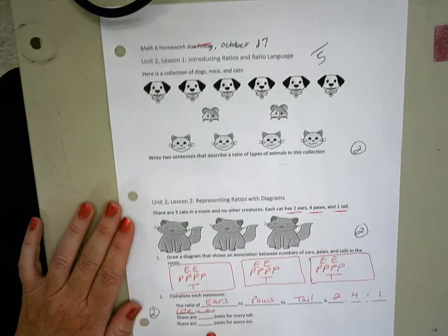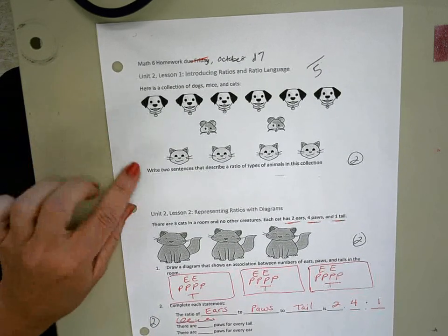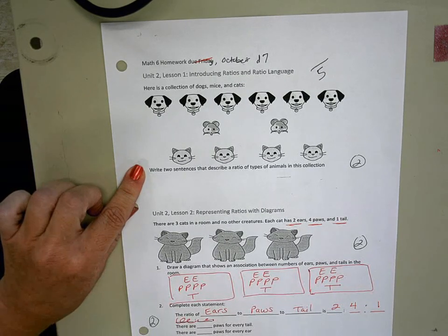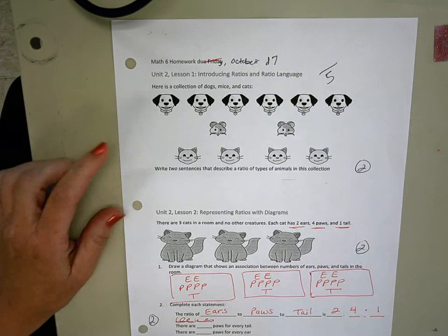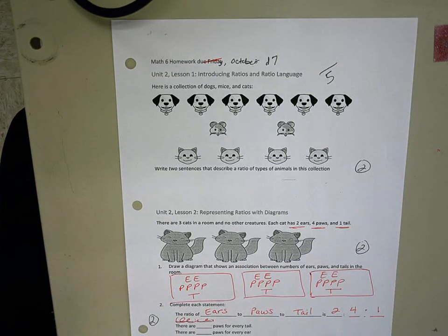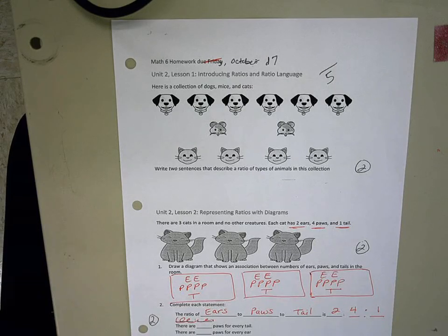All right, make sure you don't forget to do number one. Write two sentences that describe a ratio of different animals in this collection, so you can compare dogs to cats or cats to mice.